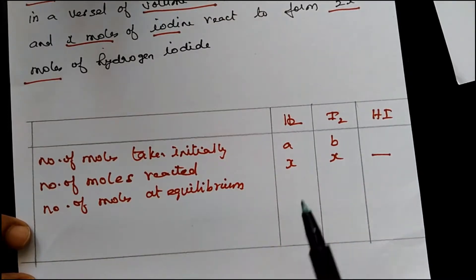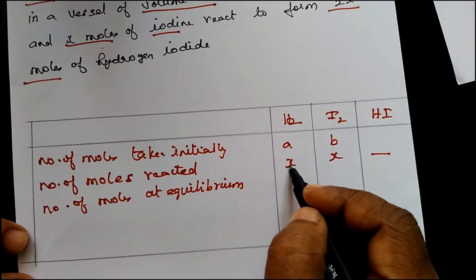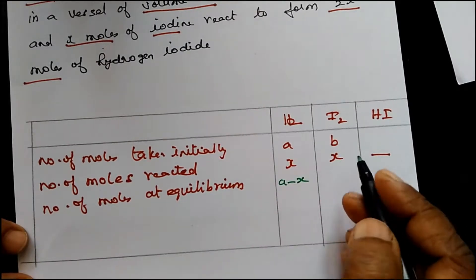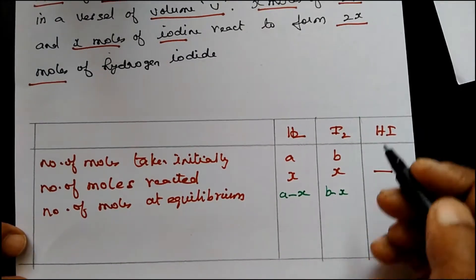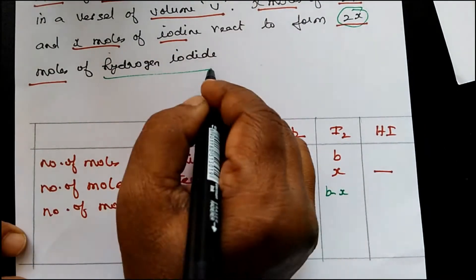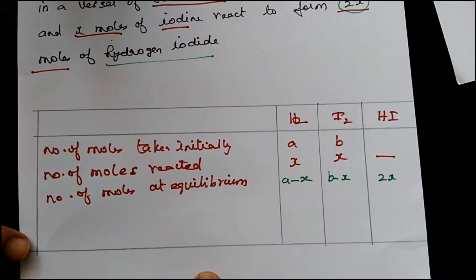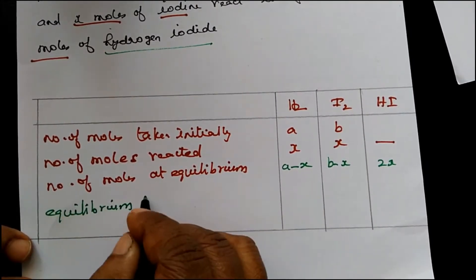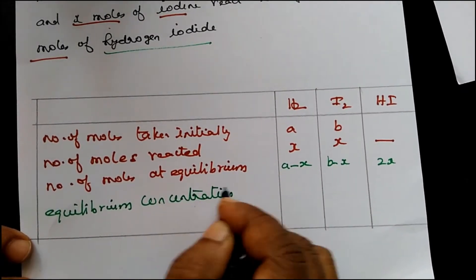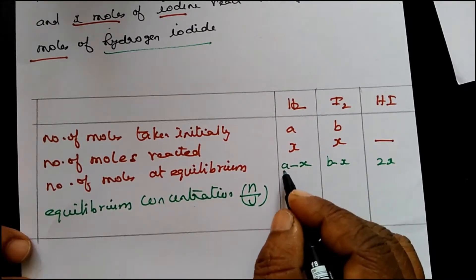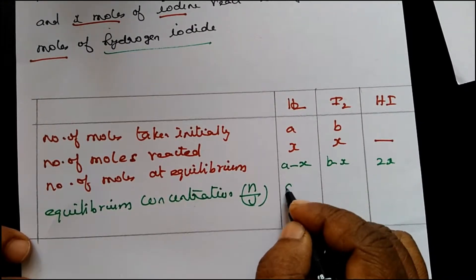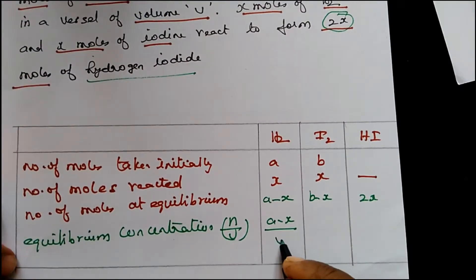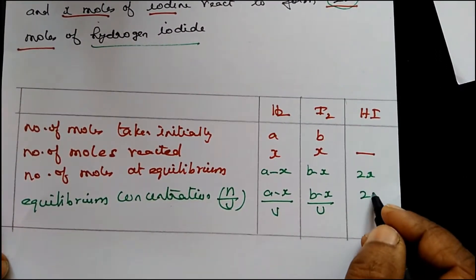The number of moles at equilibrium you can predict: from A, X moles reacted, so what is left is A minus X. From B, X moles reacted, so B minus X is left. 2X moles of hydrogen iodide are present at equilibrium. The equilibrium concentration is number of moles divided by volume: (A−X)/V for hydrogen, (B−X)/V for iodine, and 2X/V for hydrogen iodide.